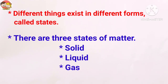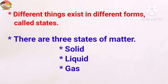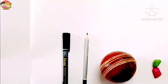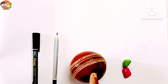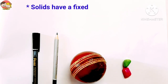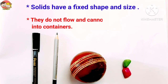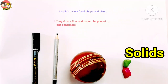Let's learn about solids. Things such as a pen, pencil, ball, stones, etc., have a fixed shape and size. They do not flow and cannot be poured into containers. Such things are called solids.